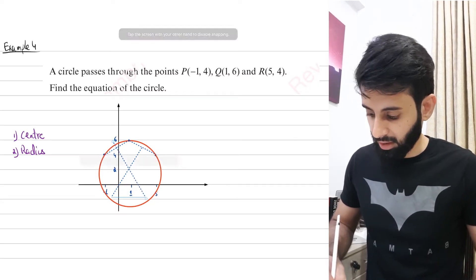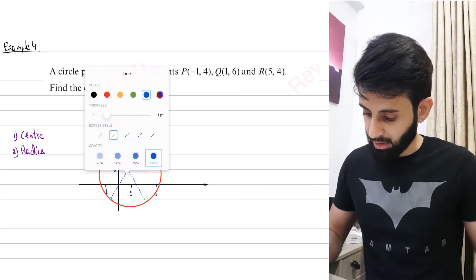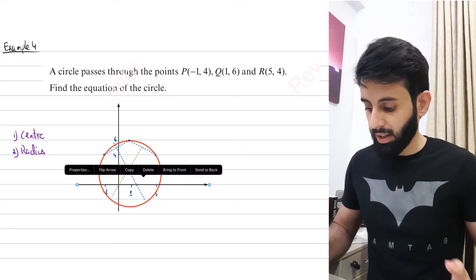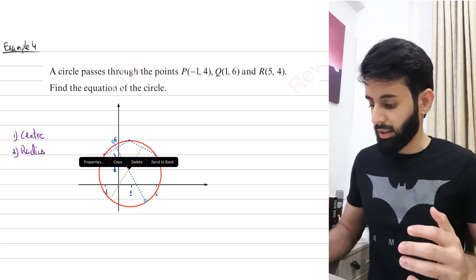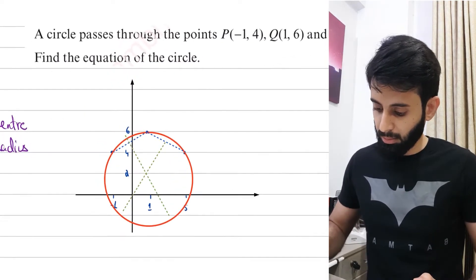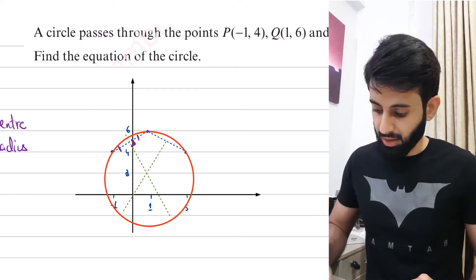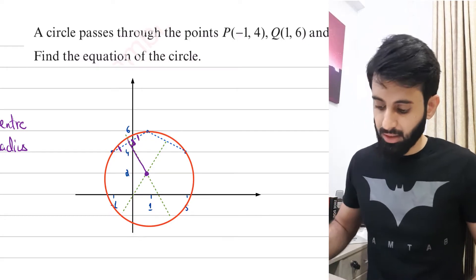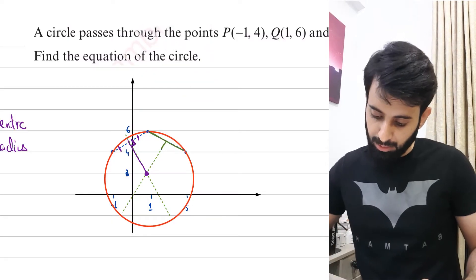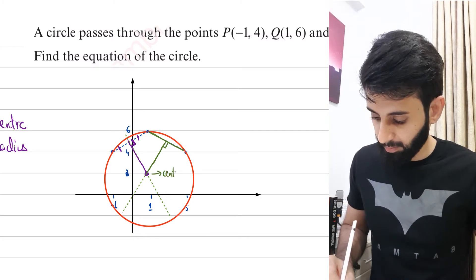The perpendicular bisector to the chord passes through the center — or equivalently, any line drawn from the center that bisects the chord is also perpendicular to it. So, highlighting in purple, this chord is bisected by the green perpendicular bisector, and that intersection point is the center of the circle.